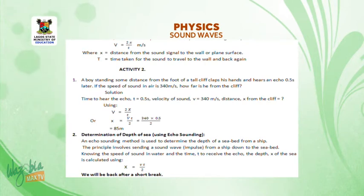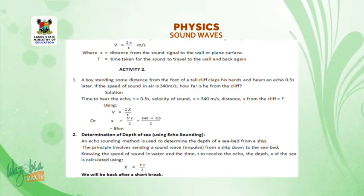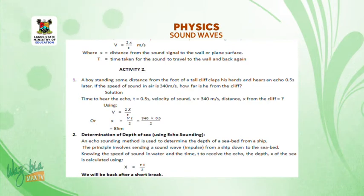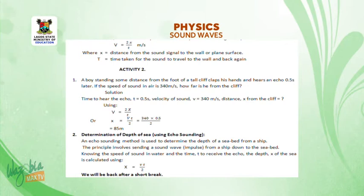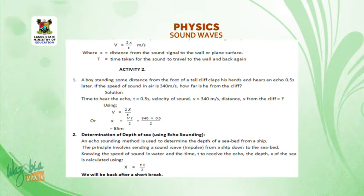Number 2: determination of depth of seabed using echo sounding. An echo sounding method is used to determine the depth of a seabed from a ship. This principle involves sending a sound wave from a ship down to the seabed; knowing the speed of sound in water and the time to receive the echo, the depth X of the seabed is given by X = VT/2.